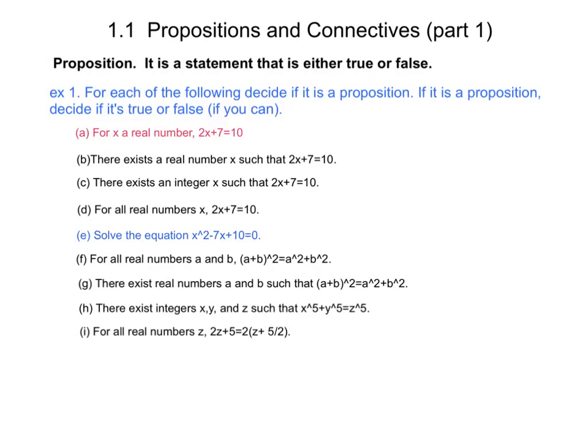A is not a proposition because we don't have enough information about x. If we replaced A by x equals 0 and 2x plus 7 equals 10, then it would become a proposition. In fact a false proposition.